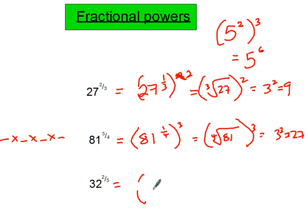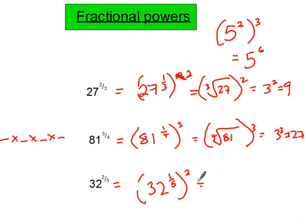For 32 to the power of two fifths, write it as 32 to the power of one fifth, raised to the power of 2. We've just seen that the fifth root of 32 is 2, so squaring that gives 4.